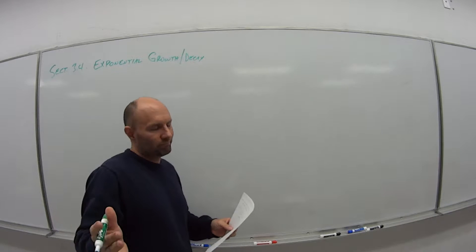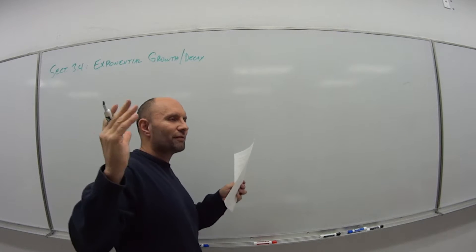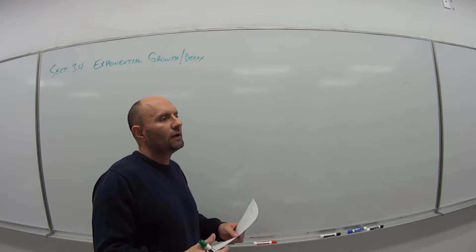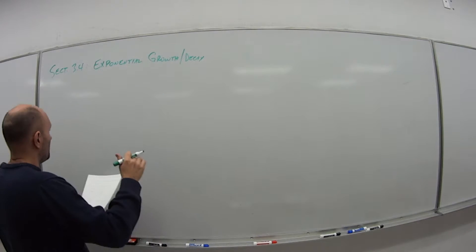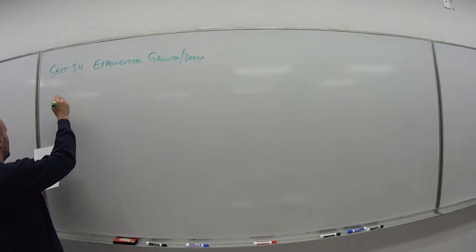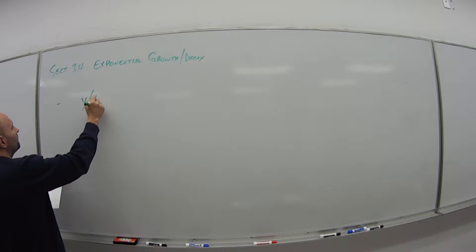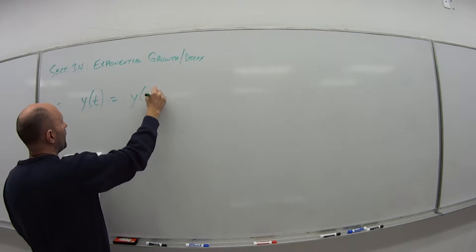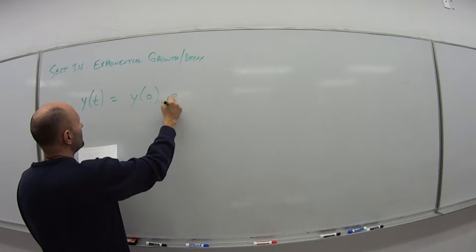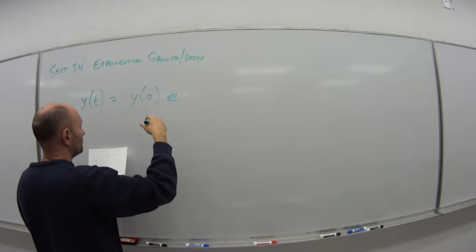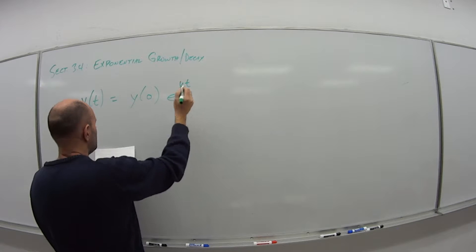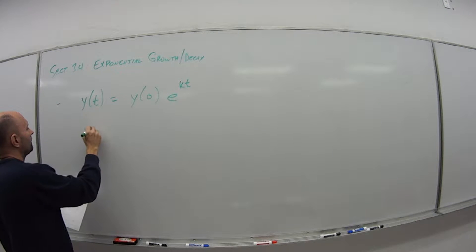So I'm not going to show you the derivation of formulas. It's in the book, Section 3.4, if you want to see it. But without going into the derivation, we have the following. My function y of t is equal to y of 0 times e to the kt power, where we have the following.